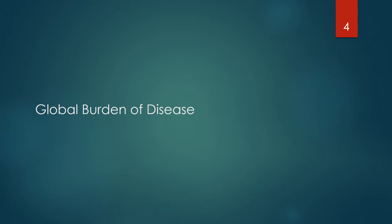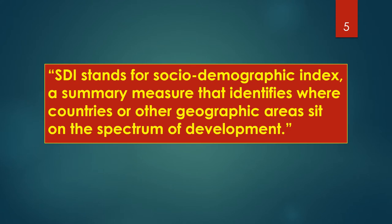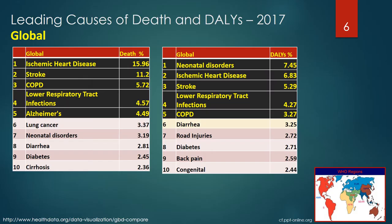Let's now use some of the measurement tools discussed in Part 1 to consider the global burden of disease. For the next several slides, we will be reviewing tables demonstrating the global and regional disease burdens based on socioeconomic status, gender, and age. The term SDI will be used to reflect the socioeconomic status of a country. SDI stands for Sociodemographic Index, a summary measure that identifies where countries or other geographic areas sit on the spectrum of development. Notice the difference in priority when considering causes of death versus the quantitative impact a disease state has on health as demonstrated by the DALYs. These values are recorded as a percent of the total.